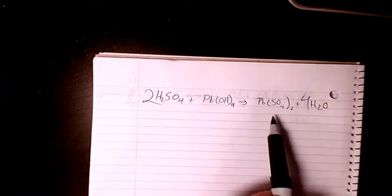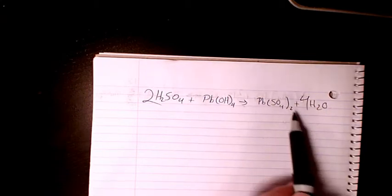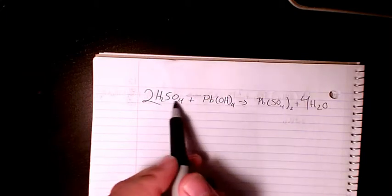For oxygen, we have 4 here and 8 here. 4 times 2 is 8, so it's going to be 12. 4 here and 8 here is going to be 12 as well.